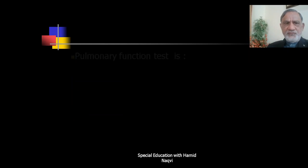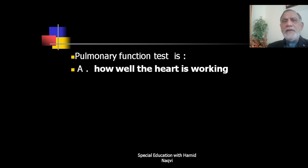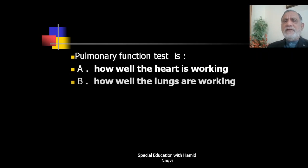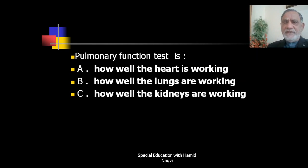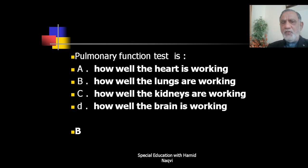Next question: A pulmonary function test measures how well — the heart is functioning, how well the lungs are functioning, how well the kidneys are working, or how well the brain is working? The correct answer is B — how well the lungs are working.